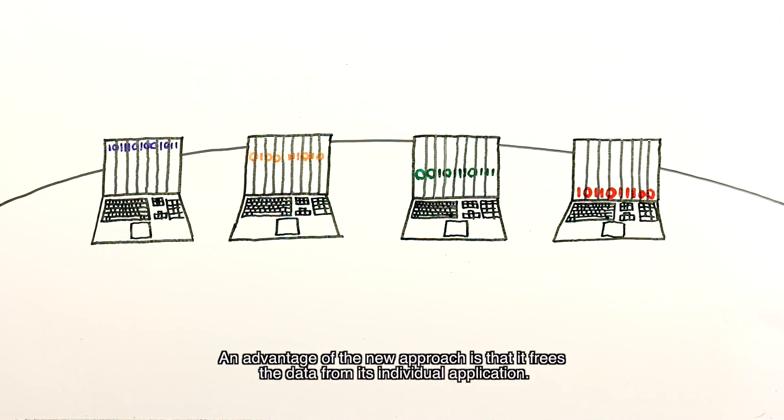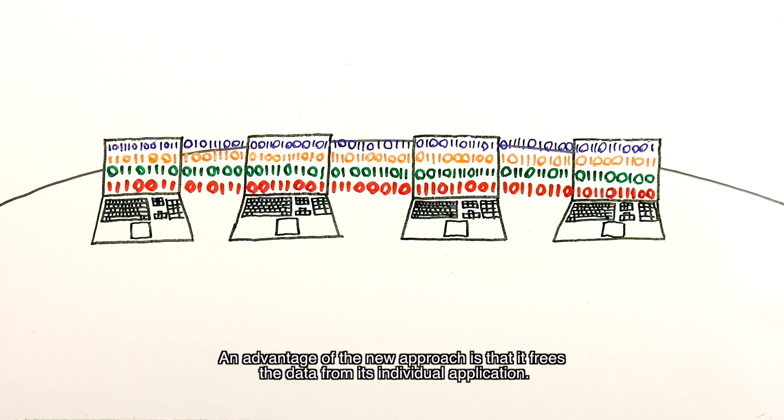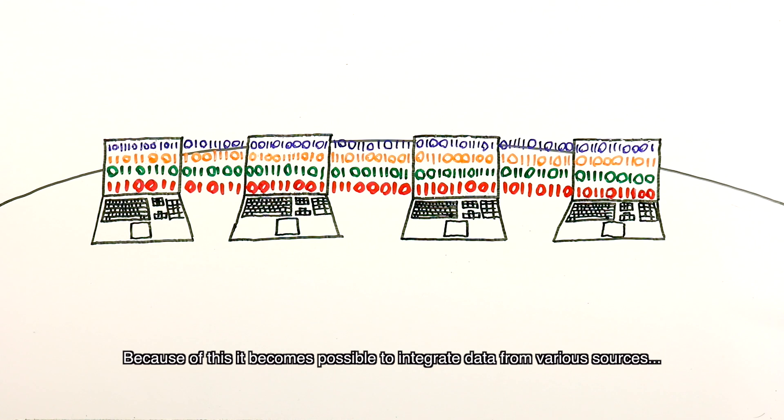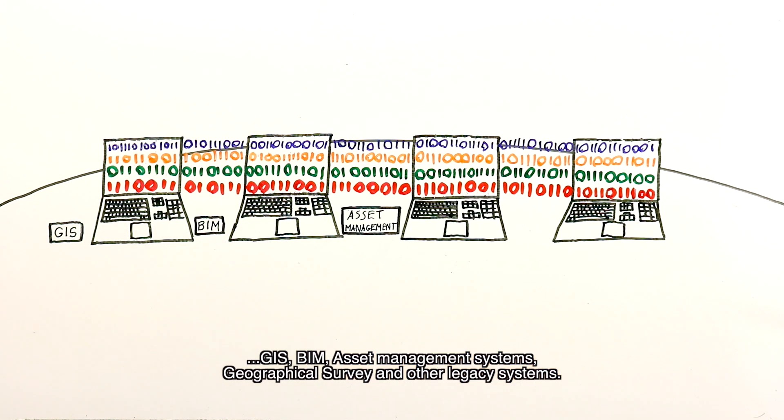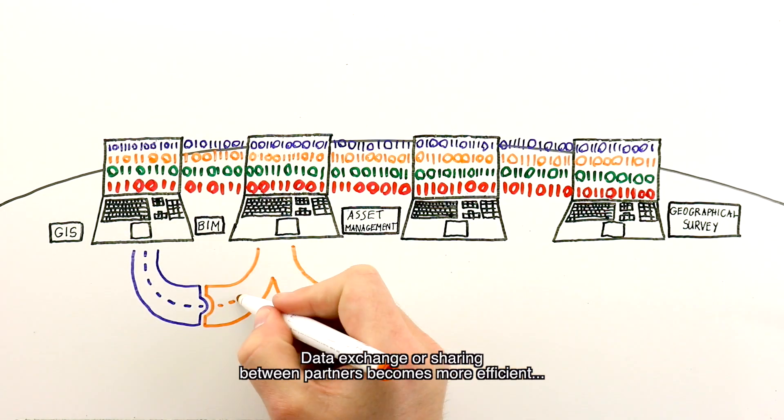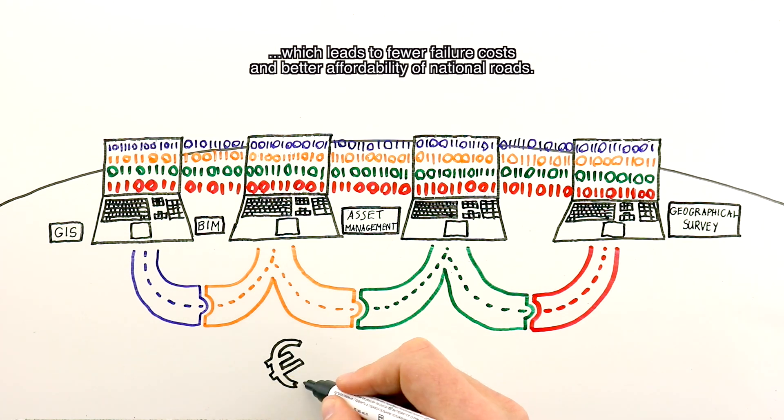An advantage of the new approach is that it frees the data from its individual application. Because of this, it becomes possible to integrate data from various sources – GIS, BIM, asset management systems, geographical survey and other legacy systems. Data exchange or sharing between partners becomes more efficient, which leads to fewer failure costs and better affordability of national roads.